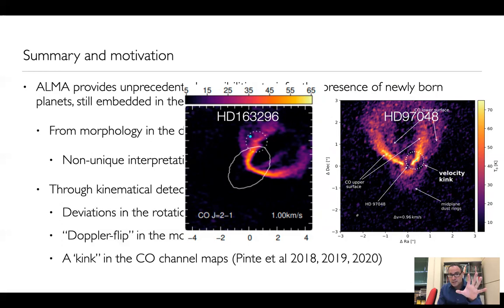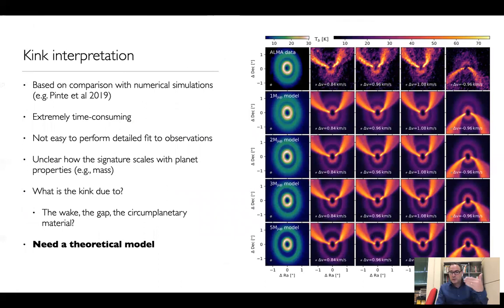The way these data are usually interpreted by Christoph and collaborators is by comparing the data with a number of complex hydrodynamical simulations of the system. Here is an example where four different models are produced with differing planet mass, and one picks the one that best reproduces the data. However, this procedure is immediately very time consuming because each single simulation takes a very long time to run, and therefore it's not easy to perform a detailed fit to the observations. On top of that, it is unclear yet how does the signature scale with the planet properties, for example, the planet mass, and therefore it's not easy to plan observations for systems for which we suspect the presence of planets based on the dust morphology.